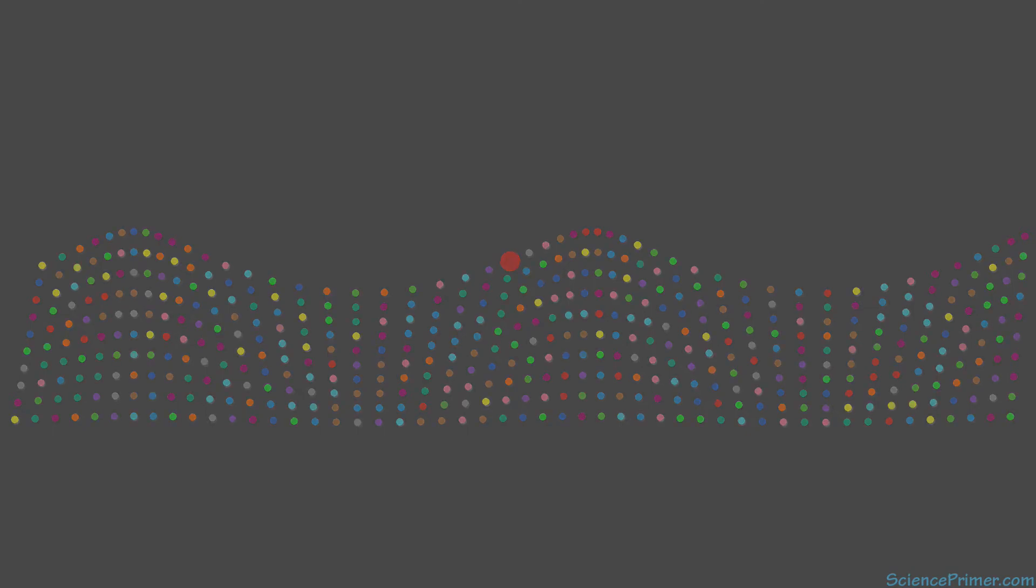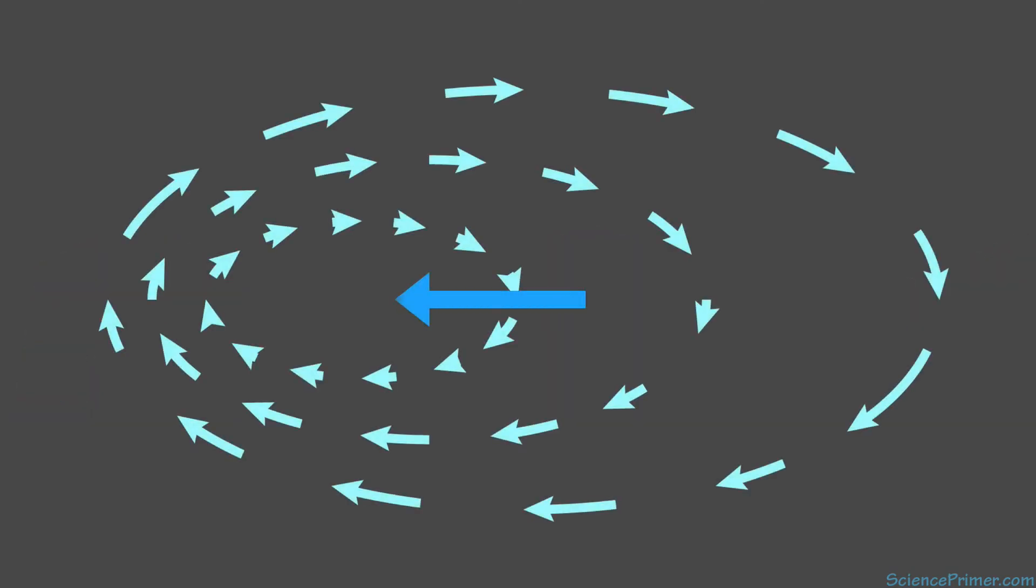Ocean gyres are asymmetric. Their centers are shifted to the west in all ocean basins. This shift causes currents on the western side of the basins to be more concentrated than those on the eastern side.